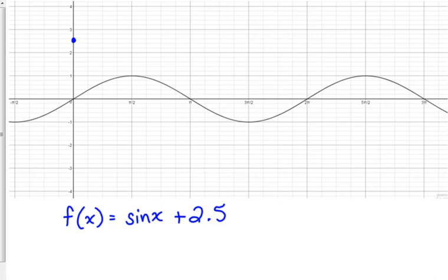If at π over 2 I hit my maximum of 1, well it's going to be 2.5 units higher than that. It's going to be at 3.5. And at π, I'm going to be back at 2.5. At 3π over 2, I'm going to hit my minimum of 1.5 instead of negative 1. And then at 2π, I'm going to be back at my midline.